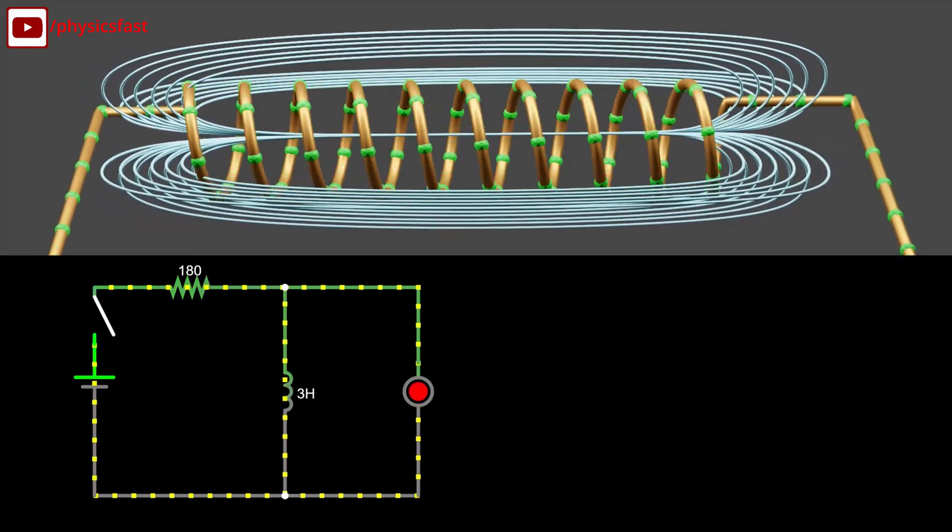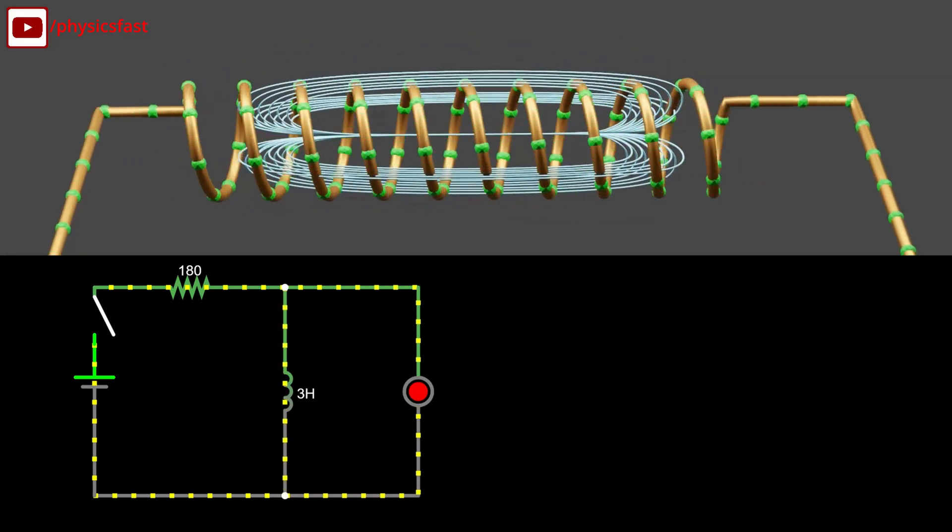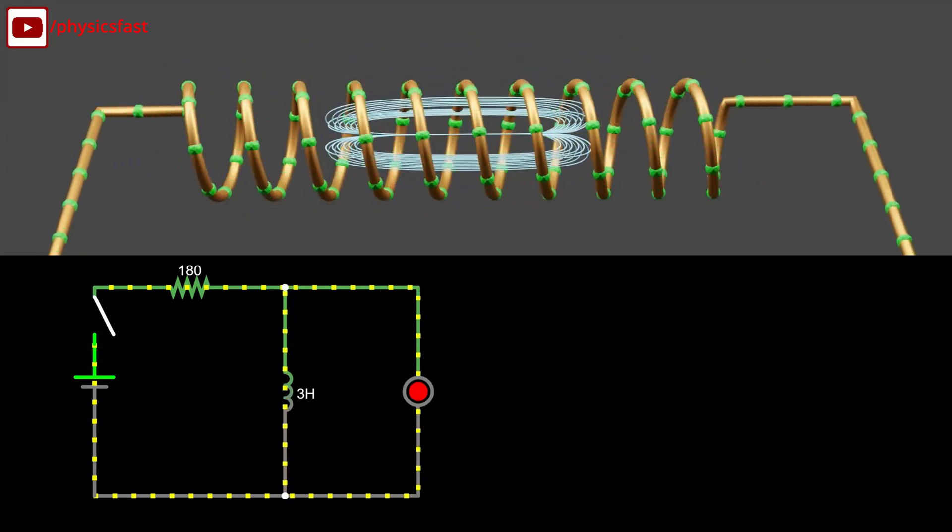When the power of the circuit is turned off, the magnetic field around the inductor decreases, and the current changes and starts flowing in the circuit.